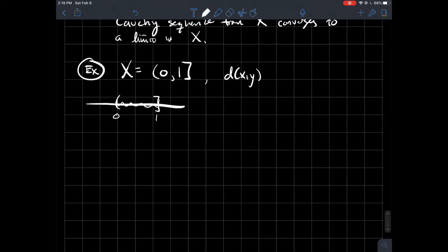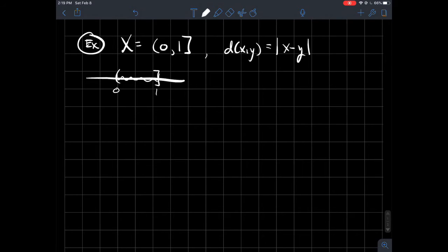And let's just say the distance between two numbers is just like I'd usually do: absolute value |x - y|. And so what I want to do is cook up a Cauchy sequence and think about what its limit would be.